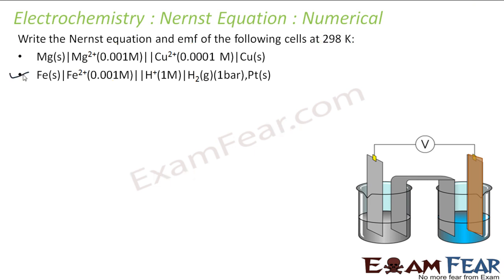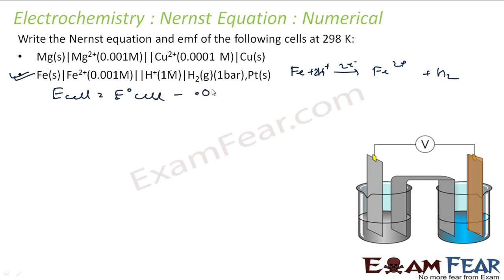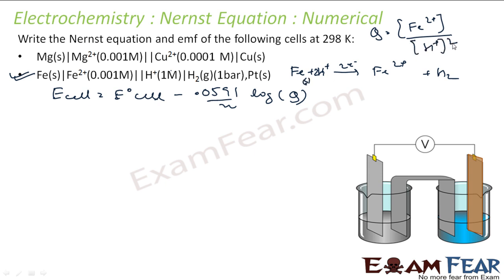Now let's do the same for the second equation. First, we write the balanced equation: Fe becomes Fe²⁺ and 2 electrons are released; then 2H⁺ is reduced to hydrogen gas H₂. That is my balanced equation. E cell equals E-naught cell minus (0.0591/N) × log Q. Q is the concentration of Fe²⁺ divided by concentration of H⁺ squared, since Fe solid and H₂ are taken as 1.